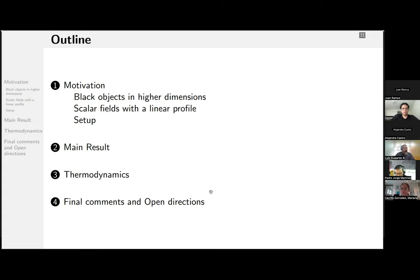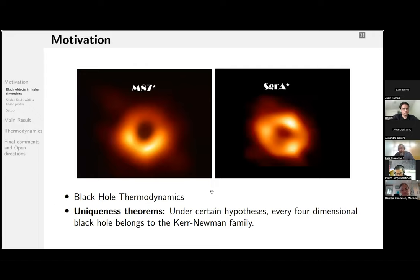Okay, so let's start motivating. The recent results of the Event Horizon Telescope attempt to confirm the existence of black holes, one of the most remarkable predictions of general relativity. Black holes are uniquely characterized by some degrees of freedom.